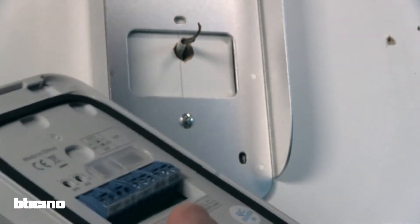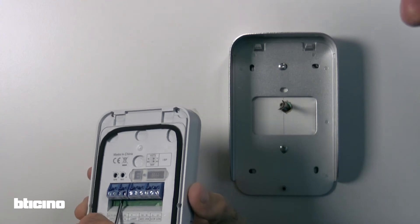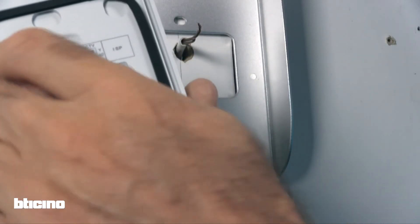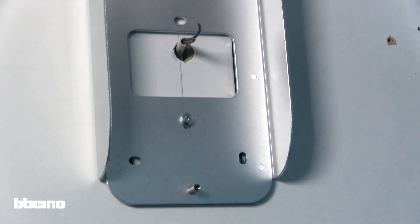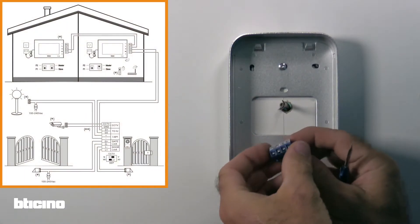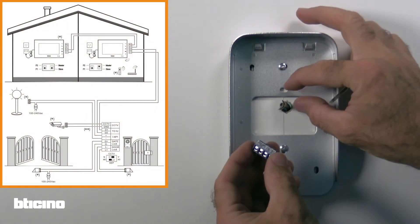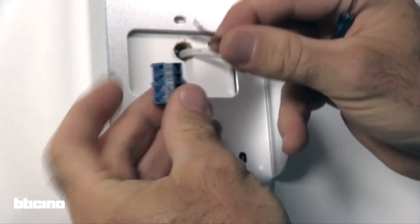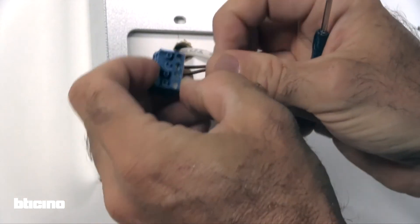For convenience, we recommend disconnecting the blue terminal to connect the wires from the hands-free internal unit. Using the diagram found in the installation manual, connect the two wires from the internal unit to terminals D1 and D2 respectively.